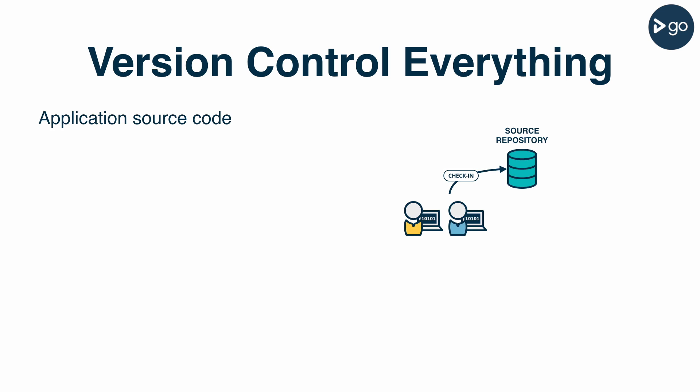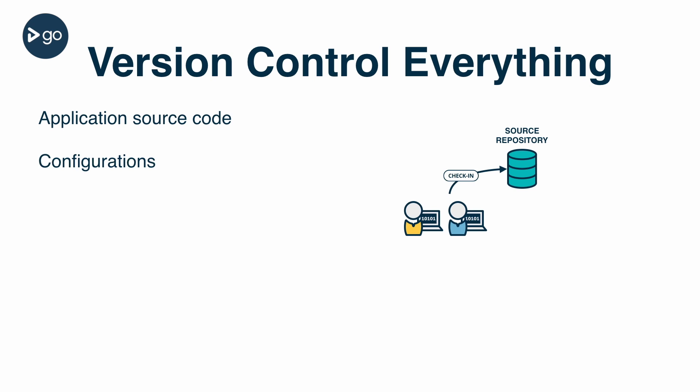It's rare, although not unheard of, to find teams today that aren't keeping their source code in version control. The same should be true for every part of your application. Things like configuration files should also be in version control. Do you use different database hosts on different environments? That information should be in a file in source control. The scripts that manage your database should also be versioned.